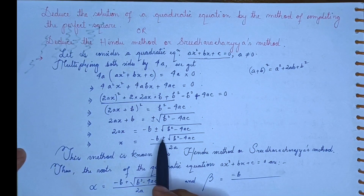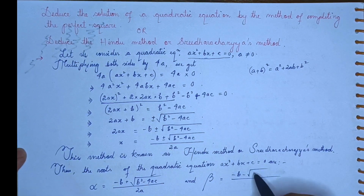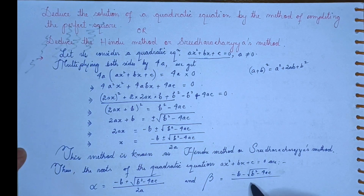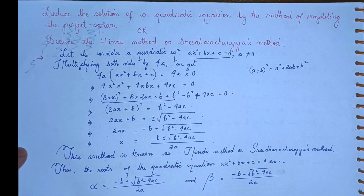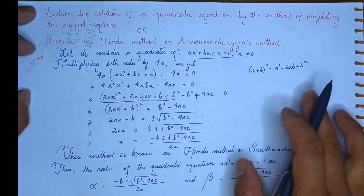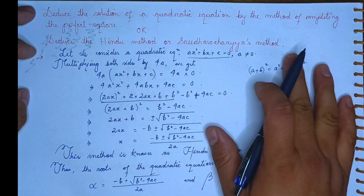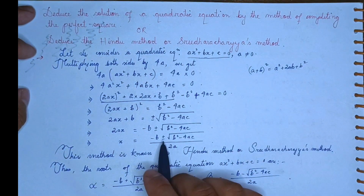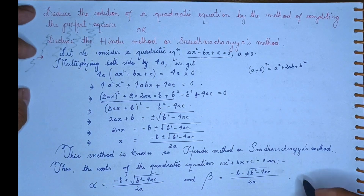Minus b plus root over b squared minus 4ac by twice a gives one root, and minus b minus root over b squared minus 4ac by twice a gives the other root. This deduces the Hindu method, or Sridharacharya method — which is the quadratic formula.